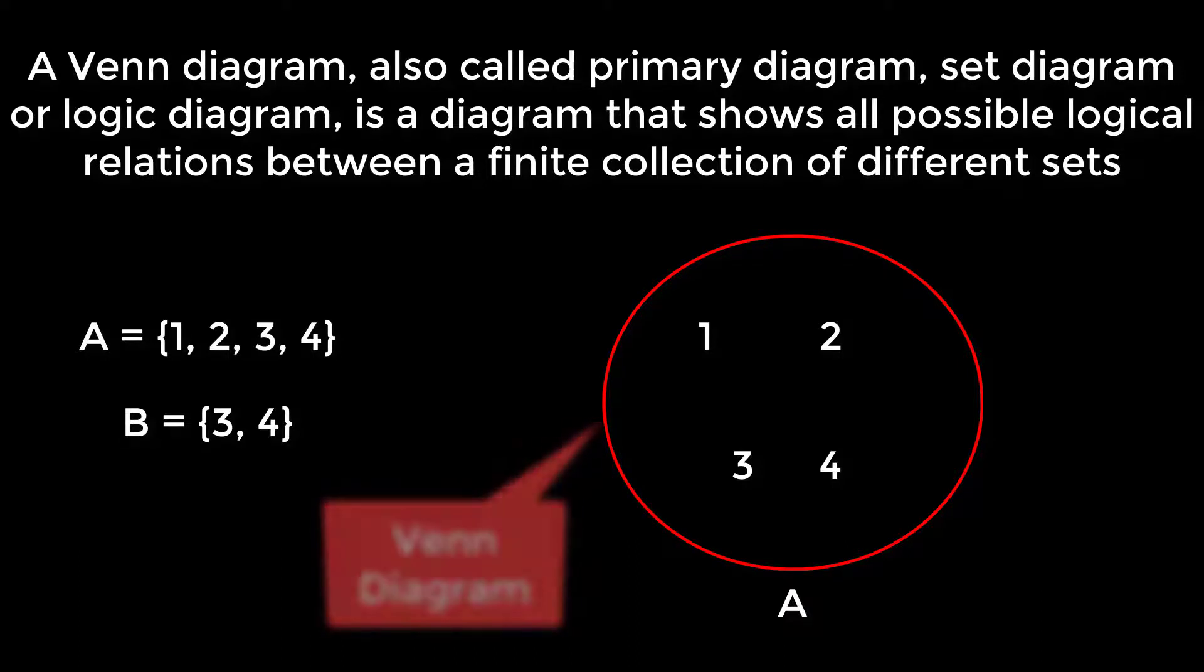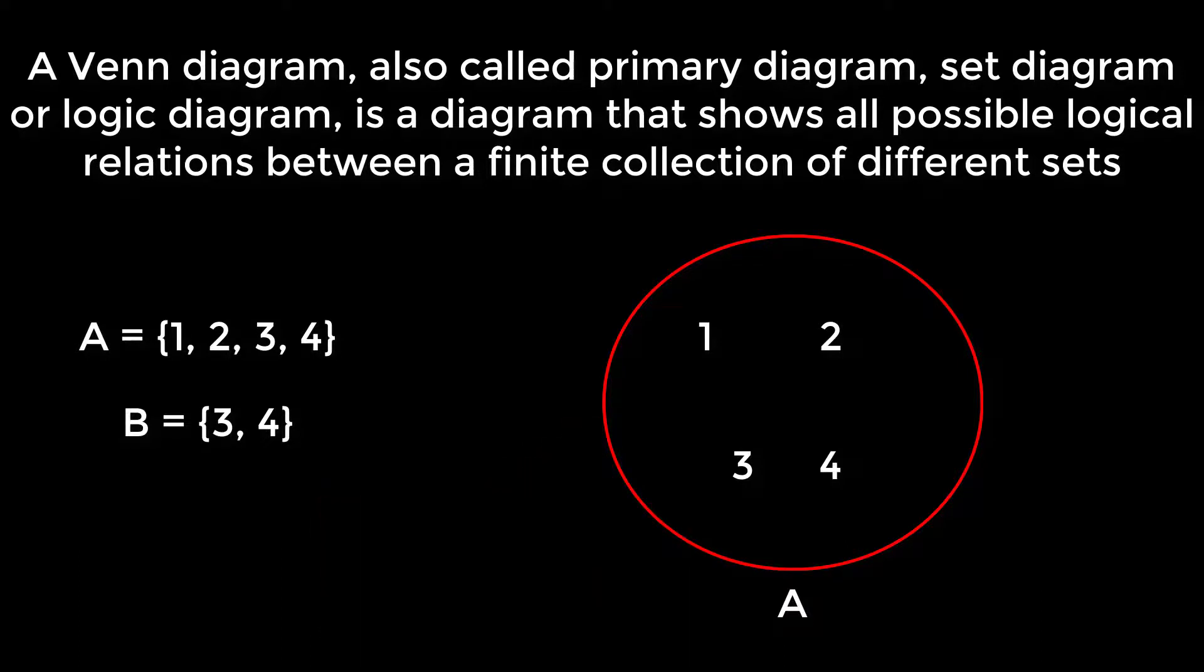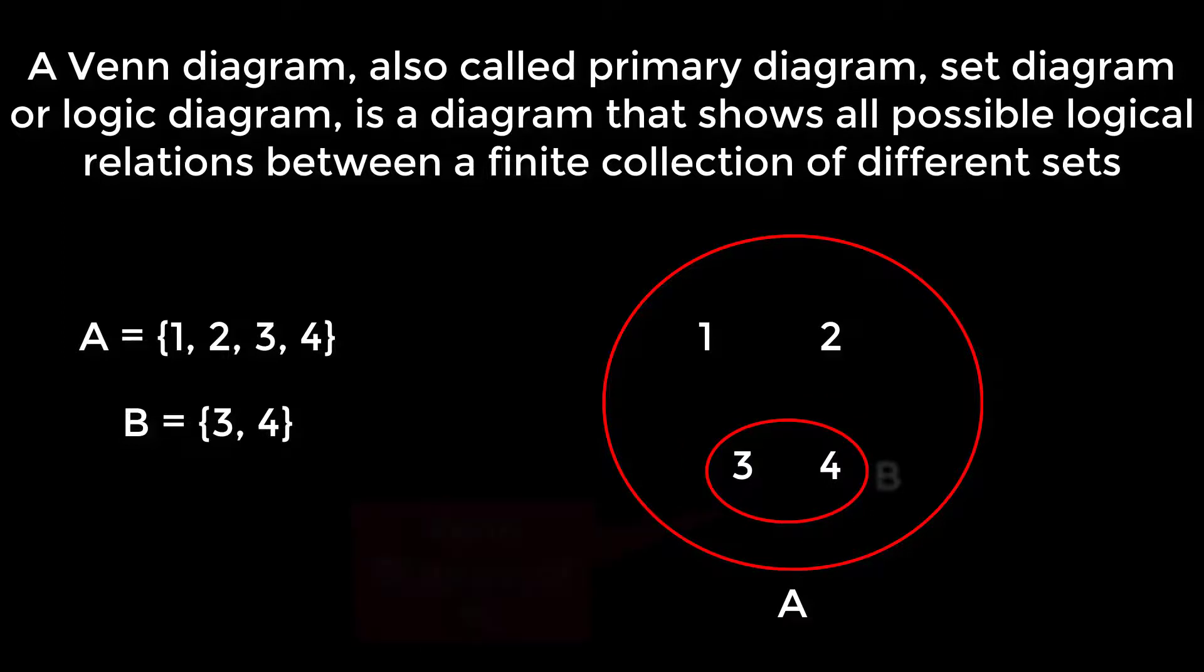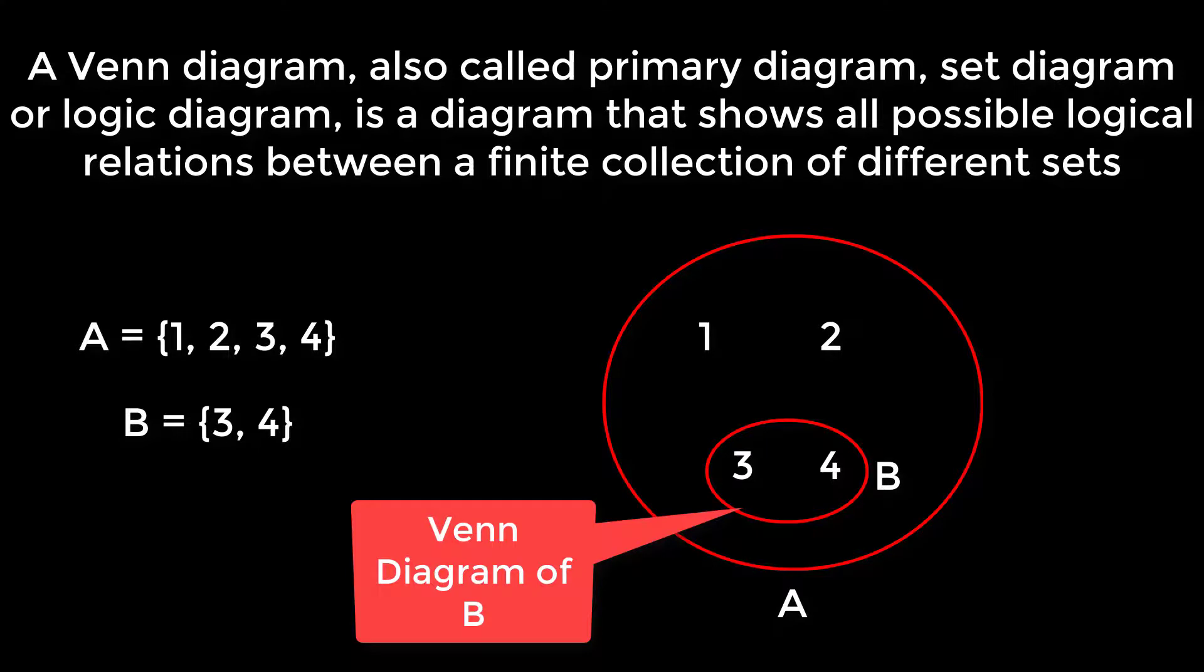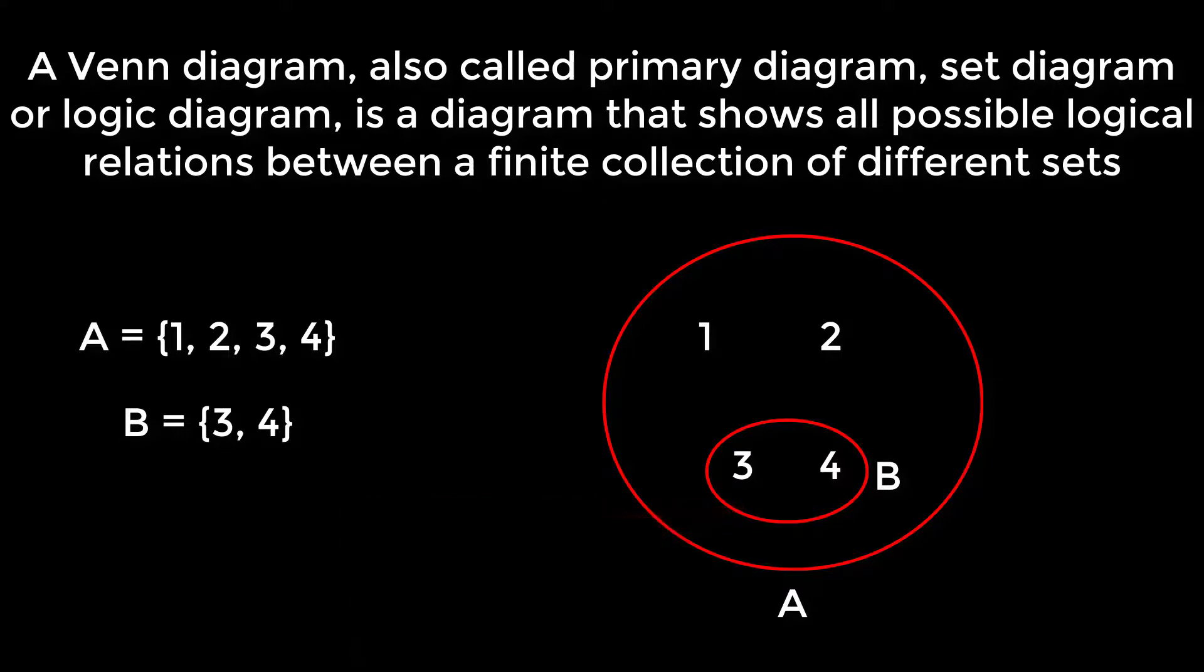The elements of B are 3, 4. If we enclose the 3, 4 here with a circle, then this is the Venn diagram of B.